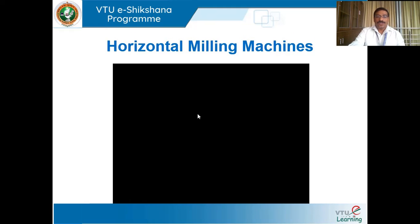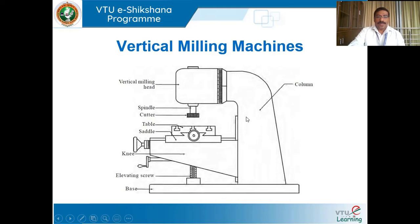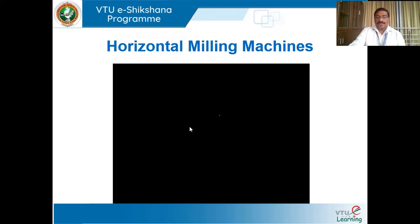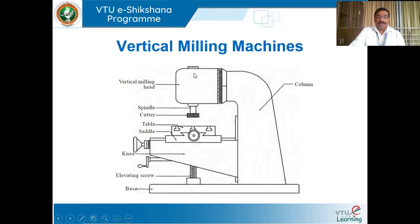The next machine is the vertical milling machine. The major difference between a vertical and a horizontal milling machine is the orientation of the cutter. In a horizontal milling machine the cutter is mounted on an arbor whose axis is horizontal. In a vertical milling machine the axis of the cutter (the spindle axis) is in a vertical position, perpendicular to the job which is placed on the table.